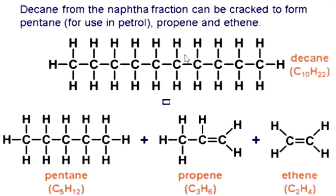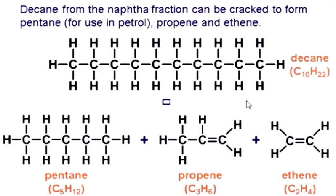We can break decane down to form pentane, which is used in petrol, propene, and ethylene. So we can break decane into pentane C5H12, propene, and ethylene by catalytic cracking. A larger hydrocarbon of not so much use can be broken into smaller, more useful fractions. Decane is broken down into pentane, propene, and ethylene.